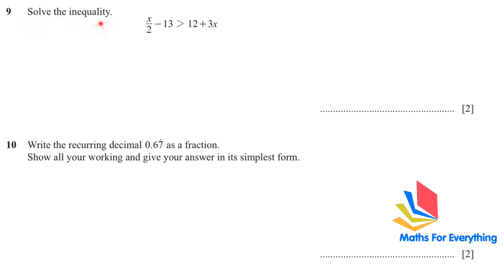Question number nine. Solve the inequality: x/2 - 13 > 12 + 3x. You have a number in the denominator. If you have a number in the denominator, to cancel that number, multiply the full equation by 2. So x/2 multiplied by 2, the 2 will get cancelled, you will get x. Negative 13 multiplied by 2 will give you negative 26. 12 multiplied by 2 is 24, and 3x multiplied by 2 is 6x.